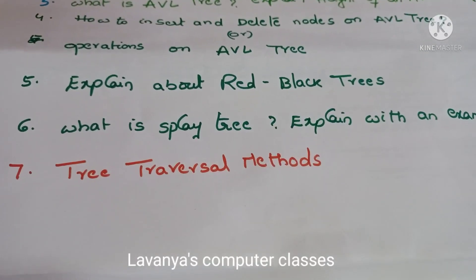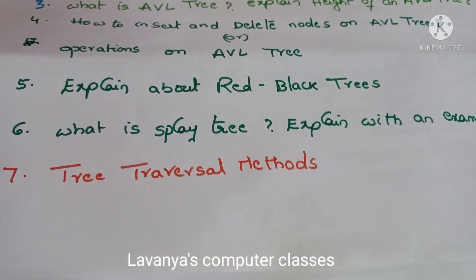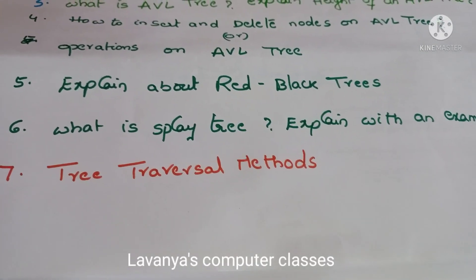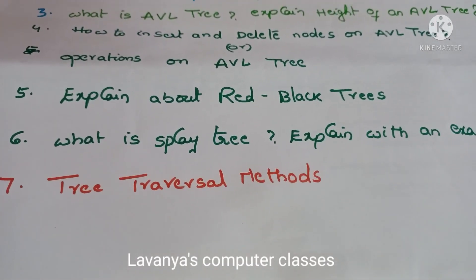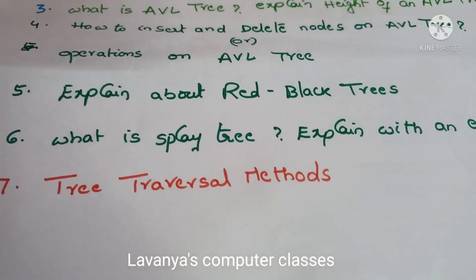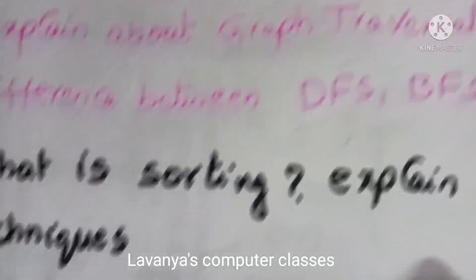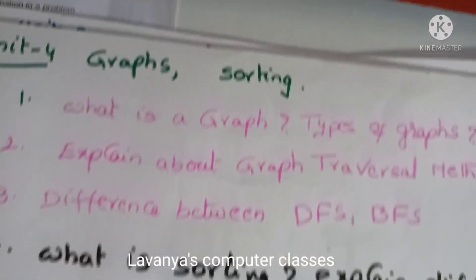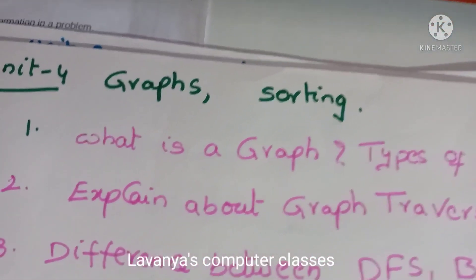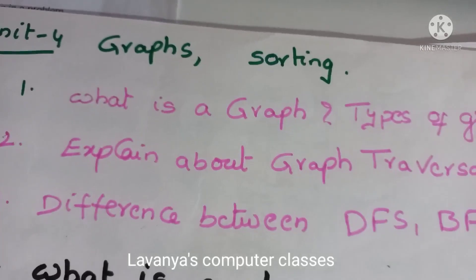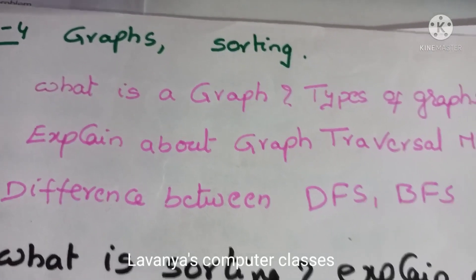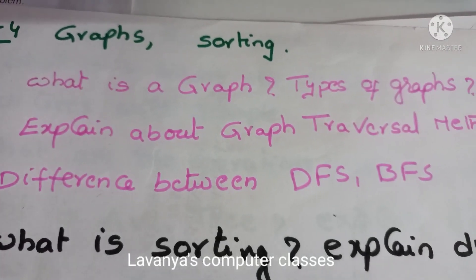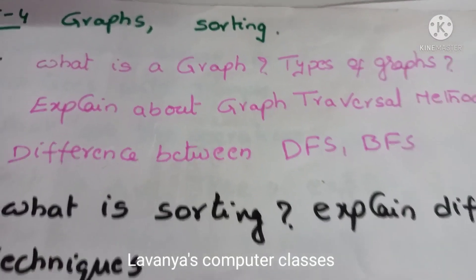In unit 3 we also have to read tree traversal methods: in-order, pre-order, and post-order. Now for unit 4, I will explain important questions. In unit 4 there are two topics: one is graphs and second one is sorting.